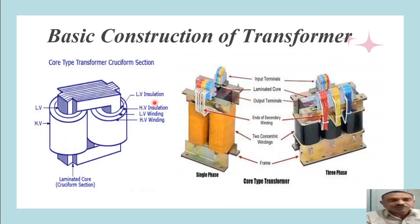Now let us see the basic construction of a transformer. The figure on the left side shows a laminated core. The core is laminated in order to reduce eddy current loss. The core is made from silicon steel HR geo-type material. This core houses the windings on its two legs, called LV and HV windings — that is low voltage winding and high voltage winding. The usual practice is to place the low voltage winding nearer to the core, thereby reducing the insulation cost.